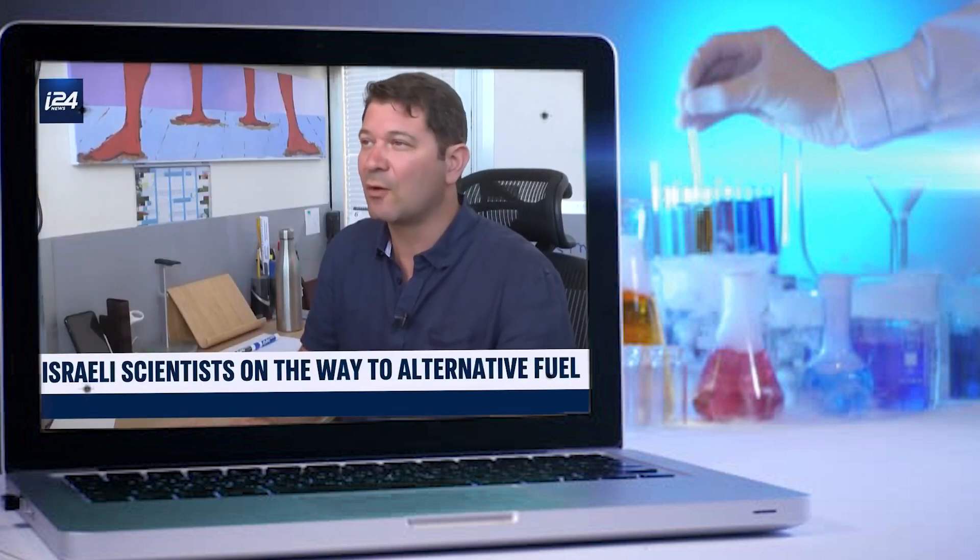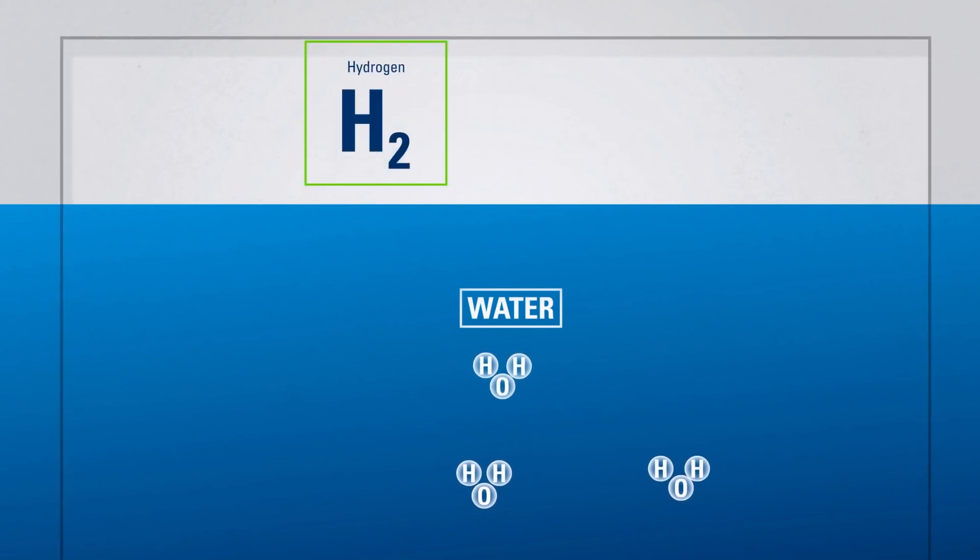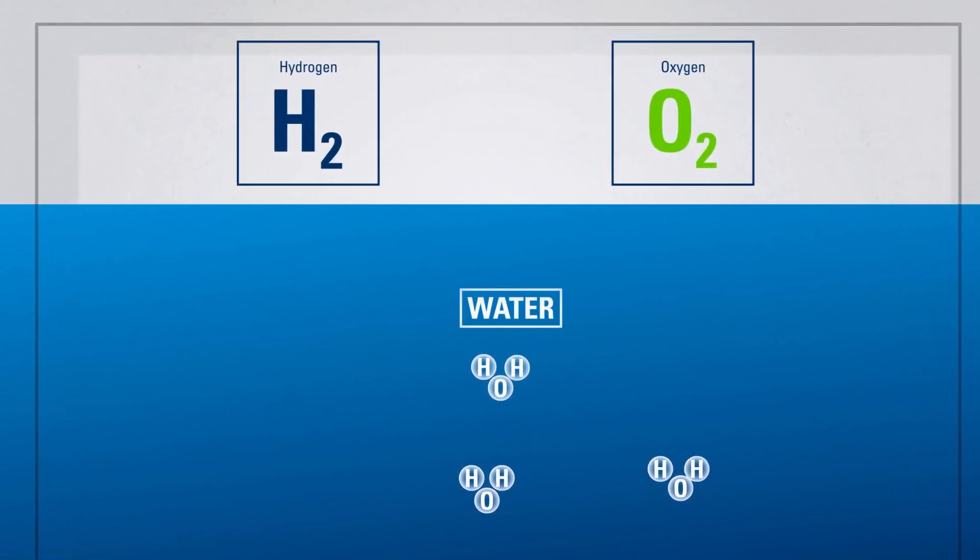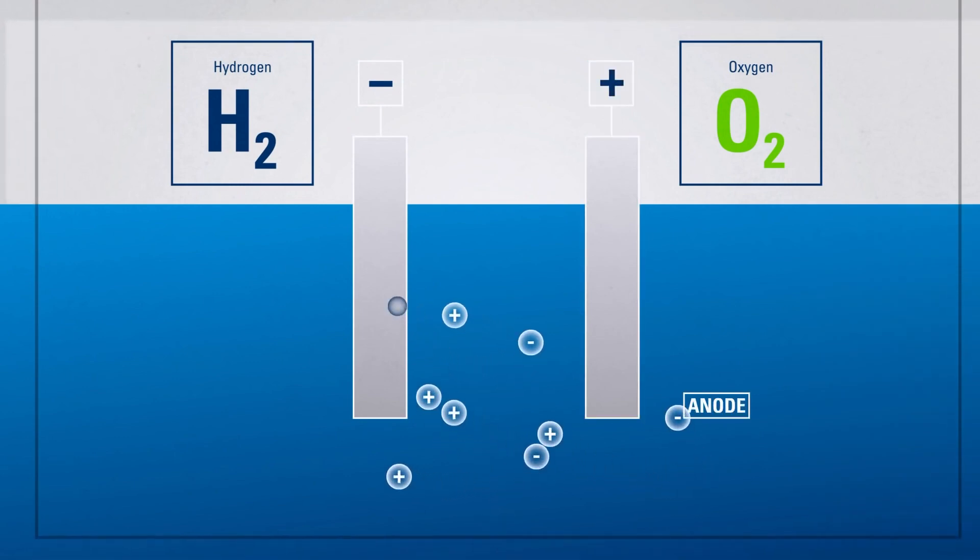Oren Benzivi, another doctoral student who co-led the study, acknowledged the existing challenges associated with producing green hydrogen, primarily centered around the high production cost due to the use of rare metals. The current state of green hydrogen production relies heavily on electrolysis, a process requiring precious and scarce metals like platinum.